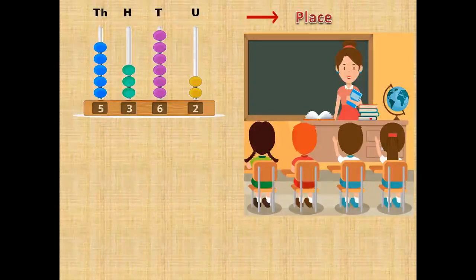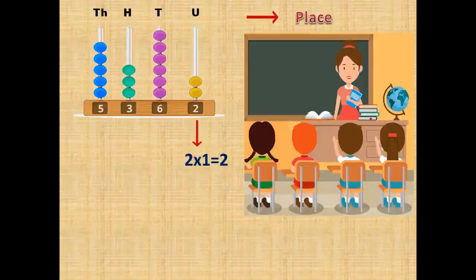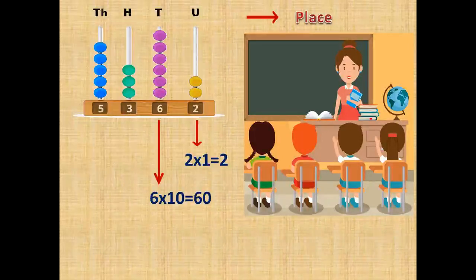For place value we multiply the number. So we get 2 multiplied by 1. That gives you 2. 6 multiplied by 10 since it's in the tens place we get 60.